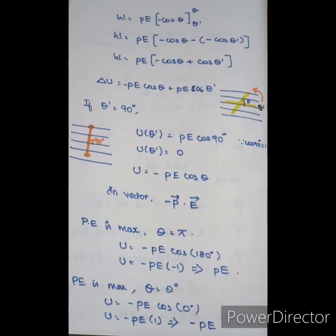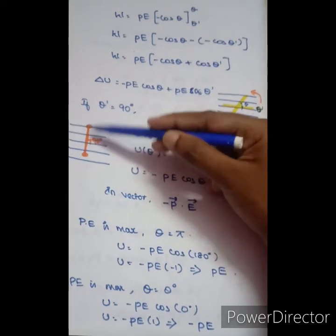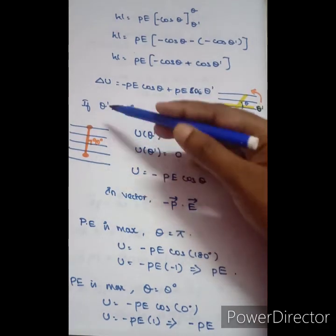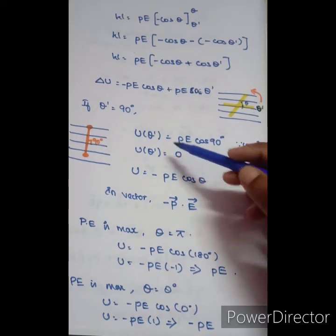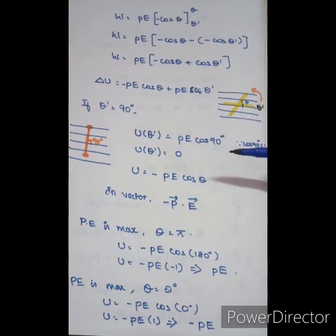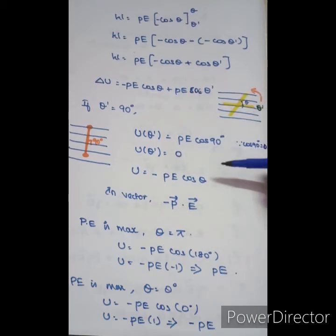Suppose we set theta-dash equal to 90 degrees as our reference — that is, the initial position has the dipole perpendicular to the electric field. Then U of theta-dash equals PE cos 90 degrees. The value of cos 90 degrees is zero, so the entire term is zero. Therefore U of theta-dash equals zero, which we use as our reference.